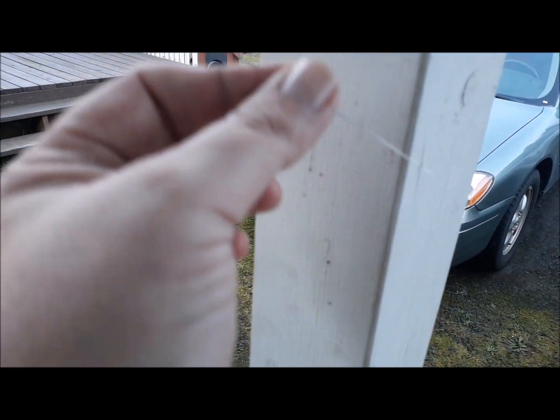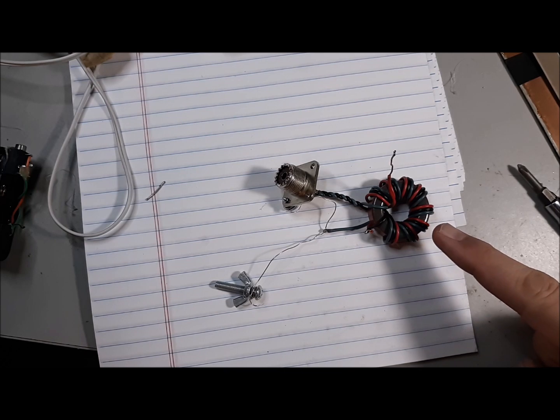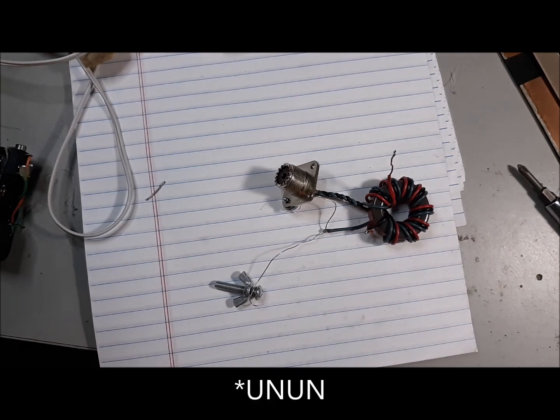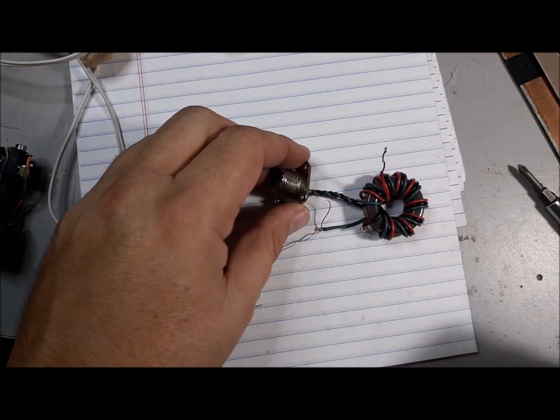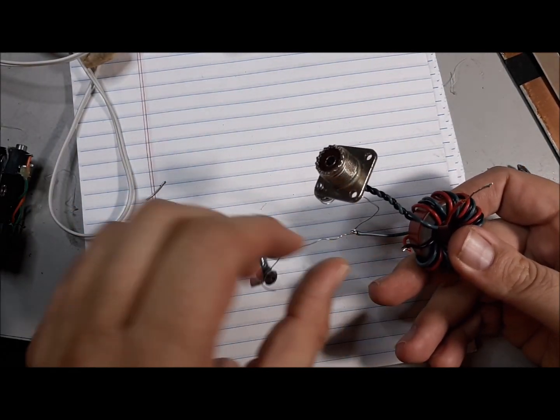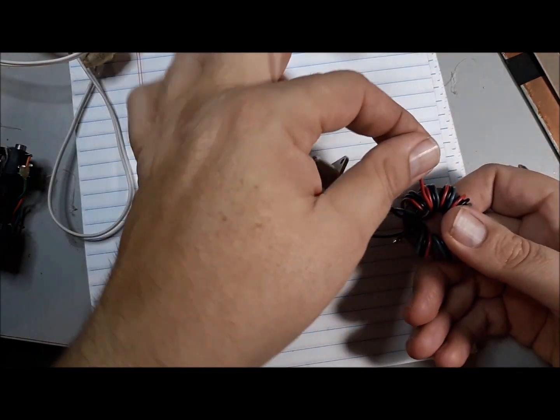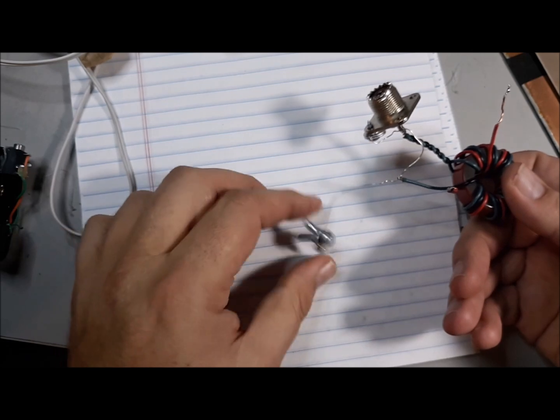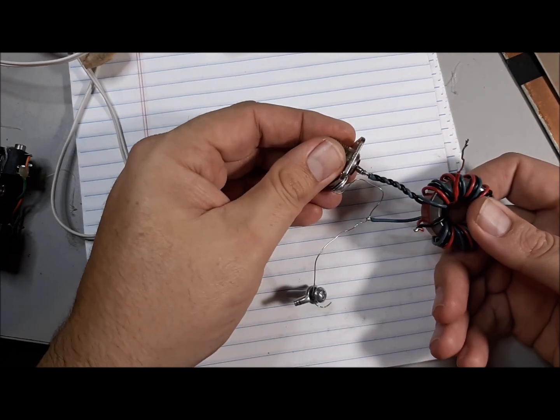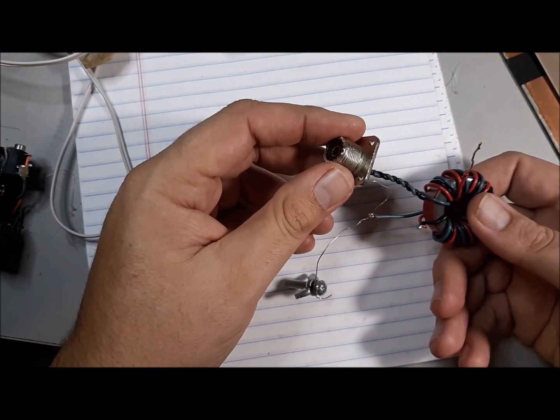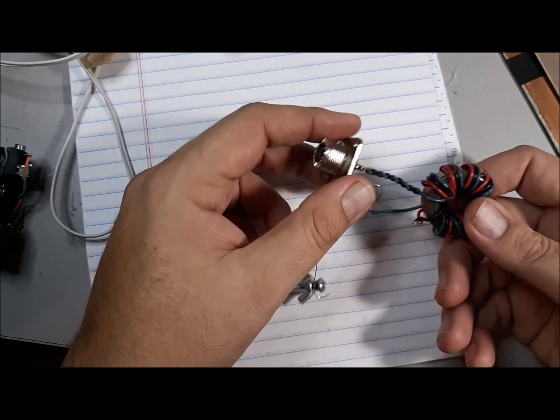What I've got to do is attach this to something and that something is this 9 to 1 end fed balun. It takes 450 ohms and turns it into 50 ohms impedance. This is unfinished, not in an enclosure or anything, and it does need to be in an enclosure. This wire goes to the antenna, this one goes to a counterpoise if not the coax itself, and we've got the RF connector here for the cable.